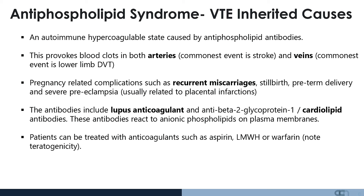Antiphospholipid syndrome in pregnancy can also lead to stillbirth, preterm delivery, as well as preeclampsia, usually related to placental infarctions as a result of recurrent blood clots.